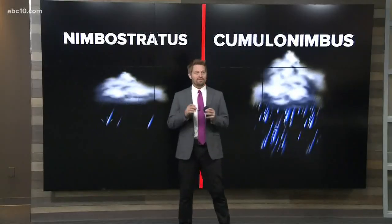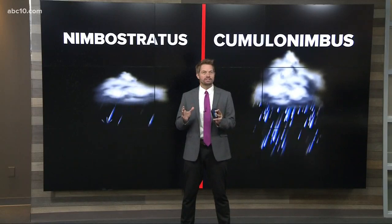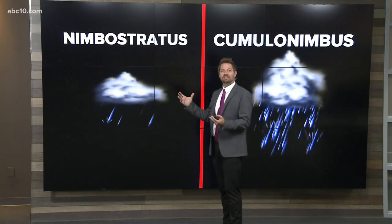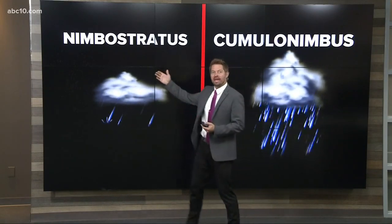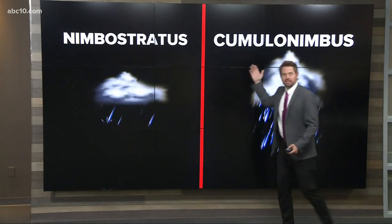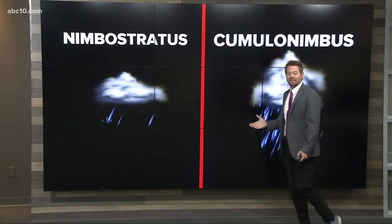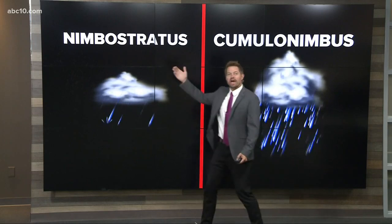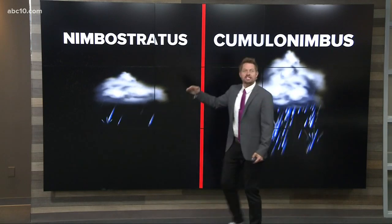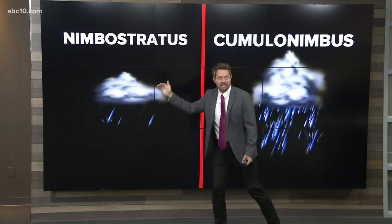Alright, I love this question because you learn a little Latin along the way. You can actually tell what kind of cloud it is by the name. Nimbo — in both of these, or a version of that — means that rain is coming out of that cloud. Stratus refers to a flat, low-lying cloud. So Nimbostratus is a flat cloud that's raining.